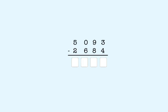Remember when subtracting, we always start with the ones place. We can't subtract four from three, so take a one from the tens. We have thirteen minus four, which is equal to nine.